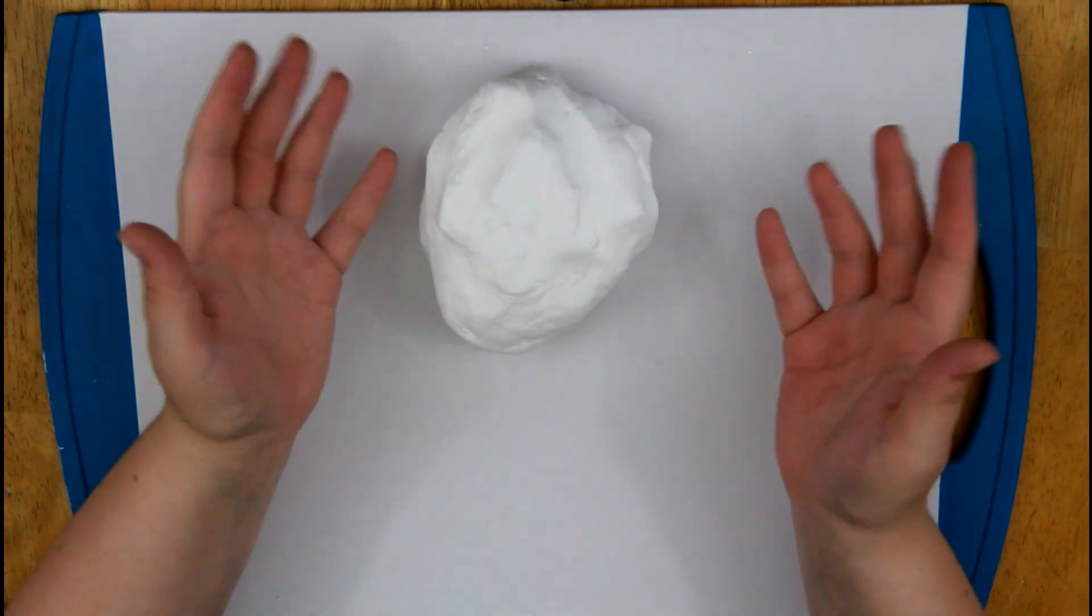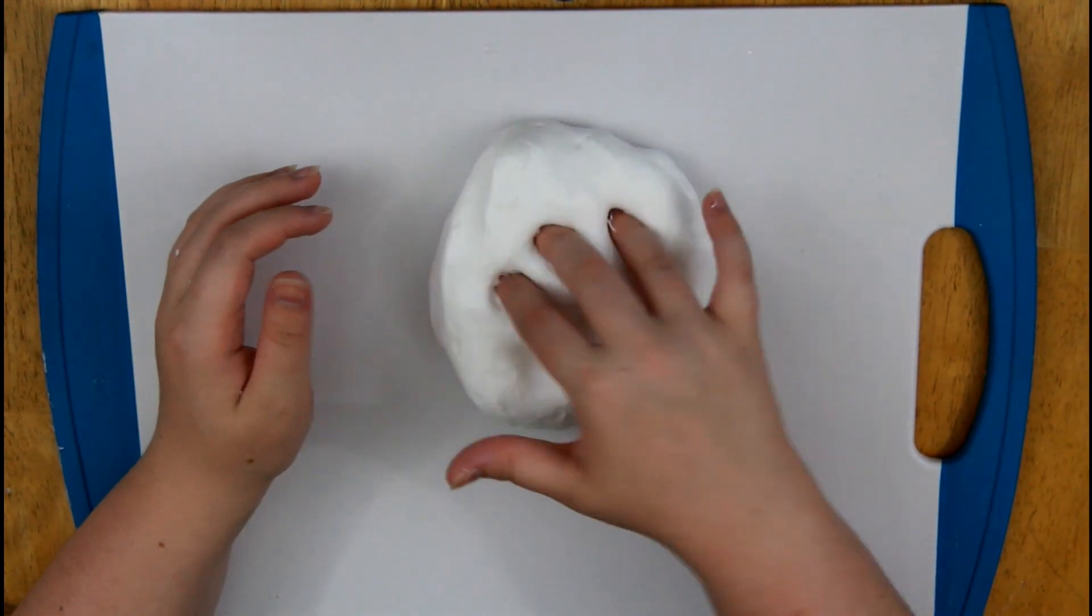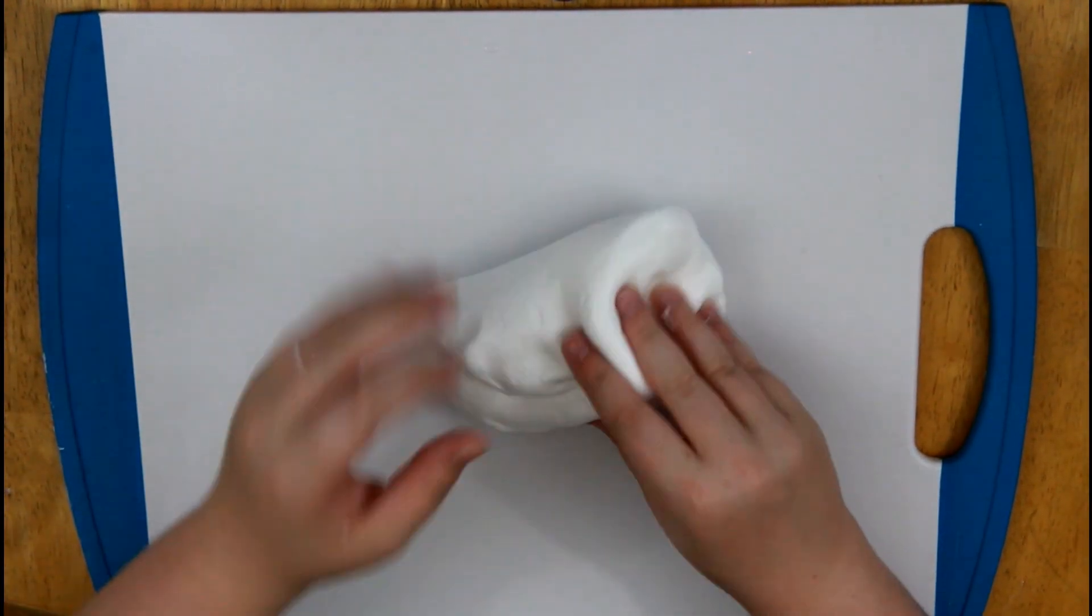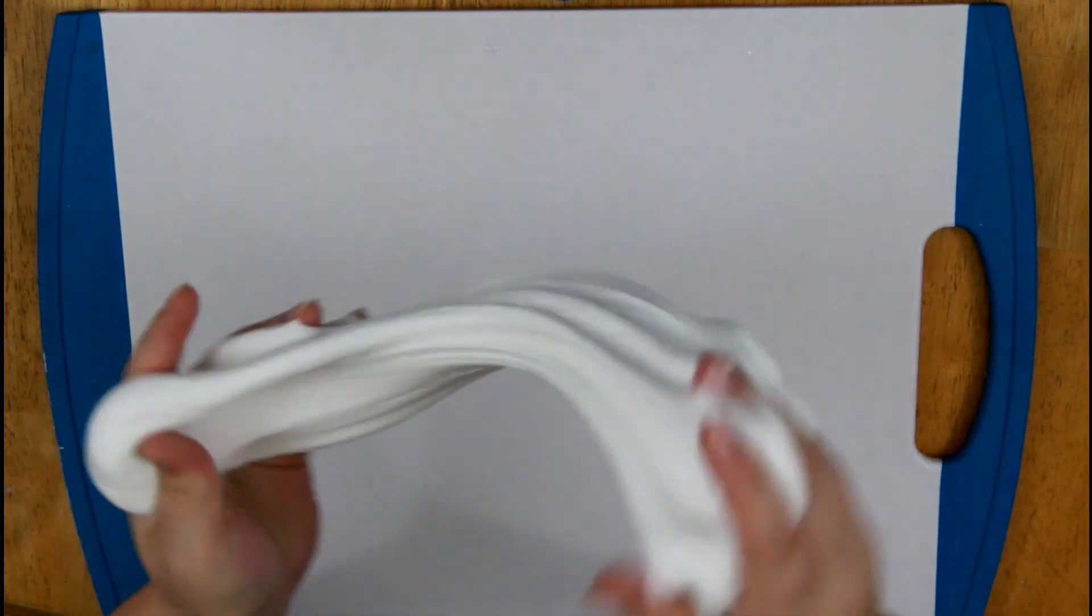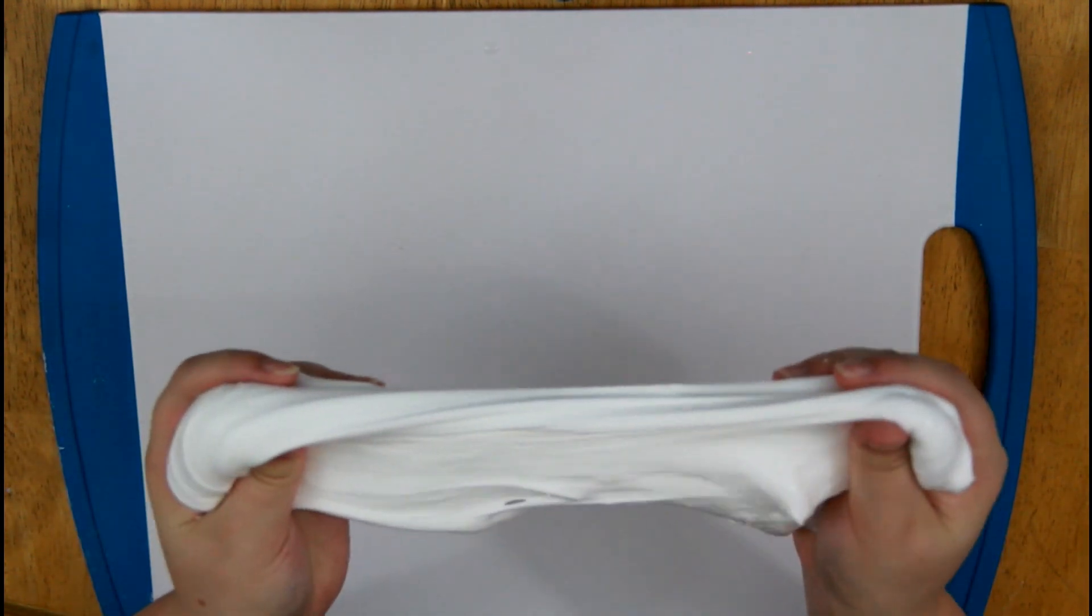Alright, so once you have your desired consistency, should be something like that, you know, not sticking to your hands too much, but still very flexible. I'm going to go ahead and split this, like I said, into three different groups, and set two of them aside.